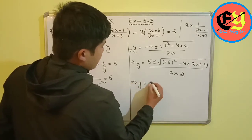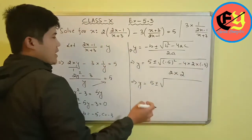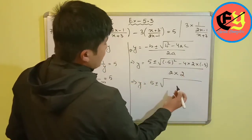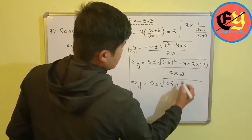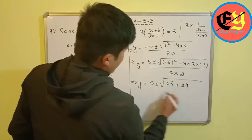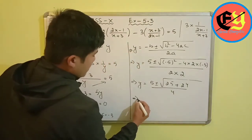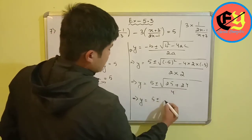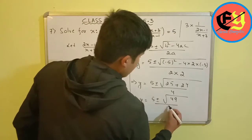So y equals 5 plus or minus root over (25 plus 24) divided by 4. That gives root over 49, and 49 equals 7 squared, so root 49 is 7. Therefore y equals 5 plus or minus 7, upon 4.